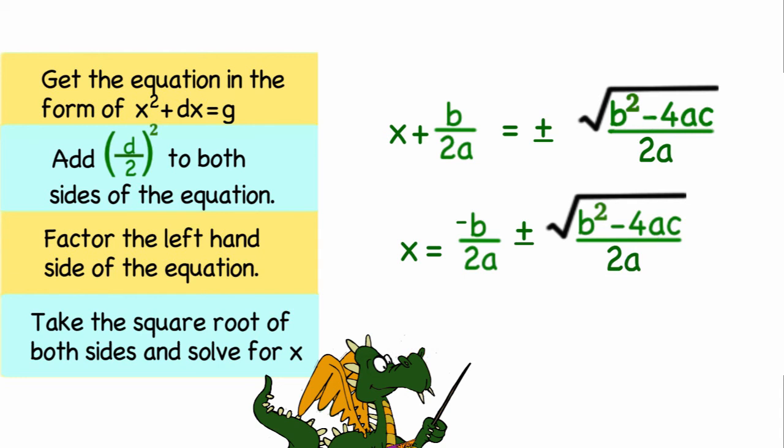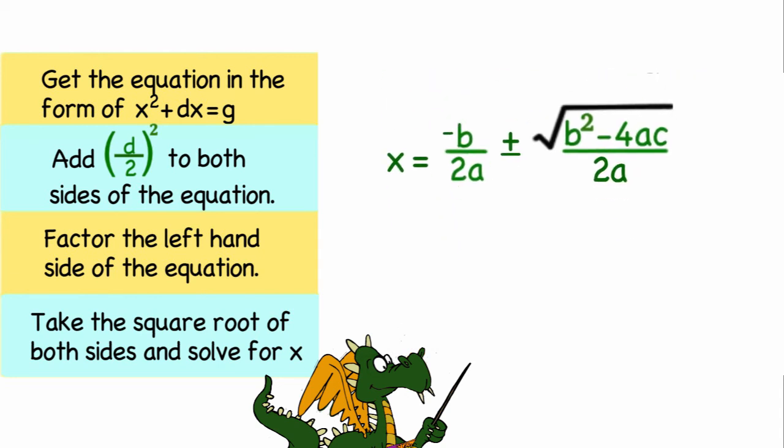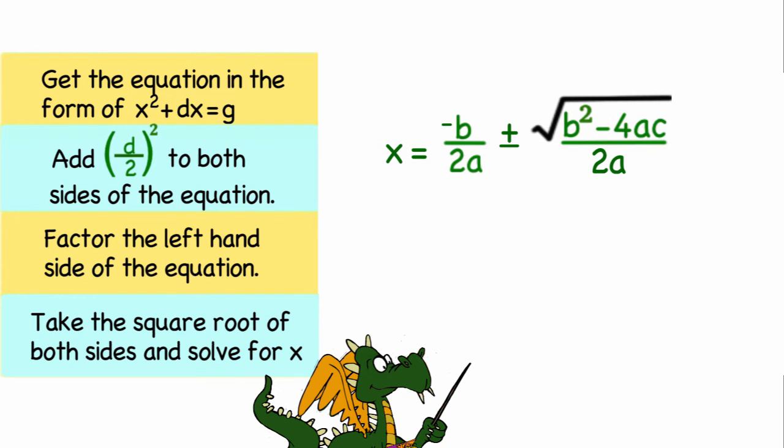I can combine those because I have a common denominator and I get the quadratic equation in its traditional form: x is equal to negative b plus or minus the square root of b squared minus 4ac divided by 2a.